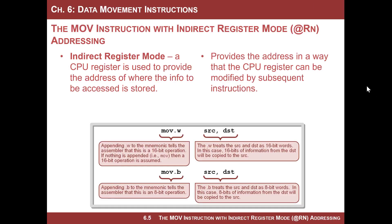Now this one is slightly more complicated than the rest. What you do in this mode is you use a CPU register to provide the address of where the information to be accessed is stored. So it's a two-step process. You have to know what the address is, either using absolute or using symbolic, and you have to bring that address into a CPU register. Then you use that CPU register to provide the address for the source.